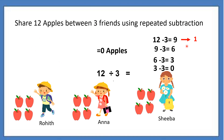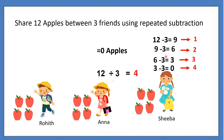So how many times have we subtracted? 12 minus 3 — first time. How many times has 3 been subtracted? You observe here: first time, second time, third time, four times. So we have subtracted 3 four times. Therefore, 12 divided by 3 is how much? It is 4. You can observe here — see the number of apples each person is having: 4 apples. So 4 is the quotient. This is by repeated subtraction we are getting the quotient.